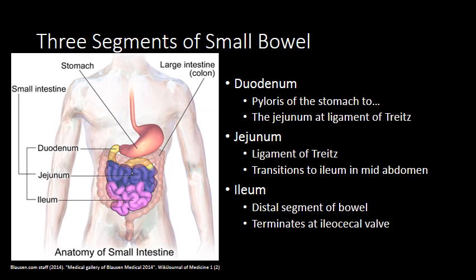The transition from the jejunum to the ileum is not very discrete radiographically. The jejunum is typically located in the upper abdomen, more to the left of midline, where the ileum tends to be located more in the lower abdomen to the right of midline. The ileum is the most distal segment of the small bowel and terminates at the ileocecal valve.